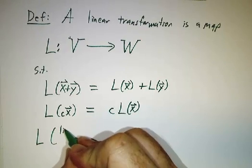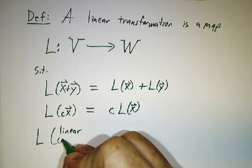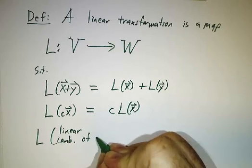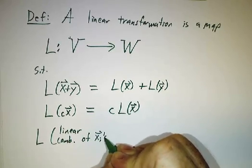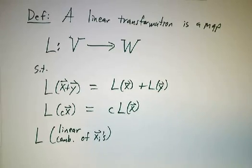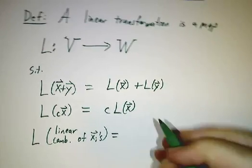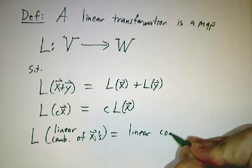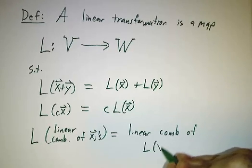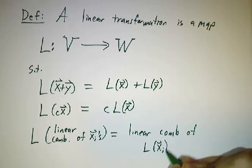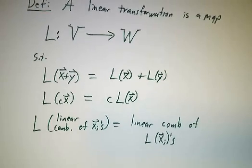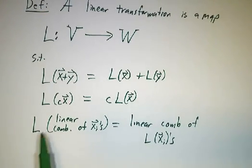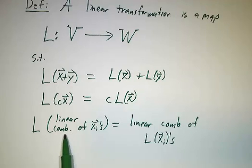And in general, if you've got a bunch of vectors and you take a linear combination of them and then you apply L, that should be the same linear combination of what you get by applying L to each one. So those are the rules for linear transformations.